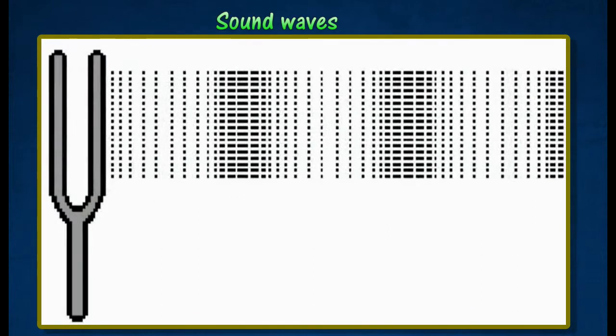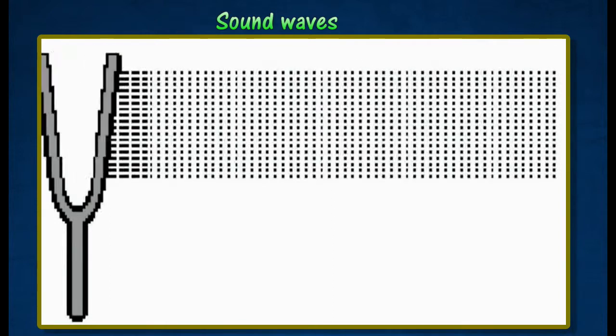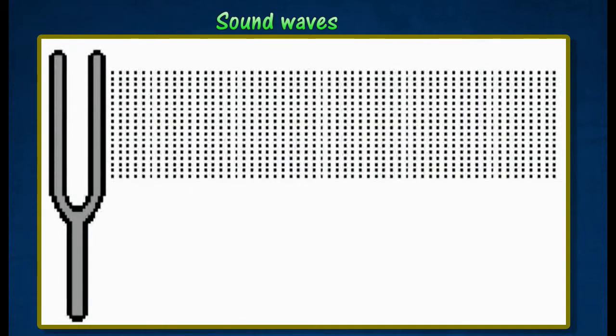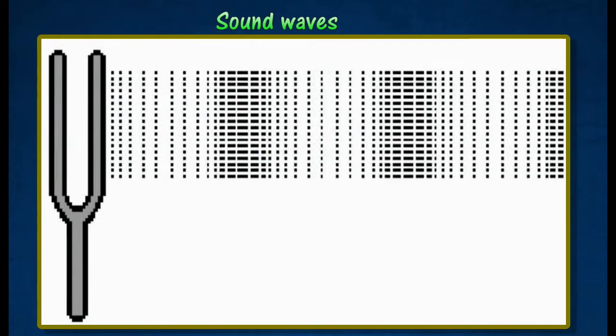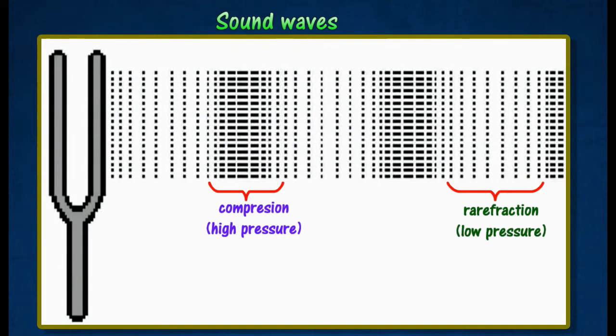Sound can be heard from a vibrating tuning fork. When the prongs of a tuning fork vibrate, layers of air are pushed close together and then pulled apart, causing compression and rarefaction.